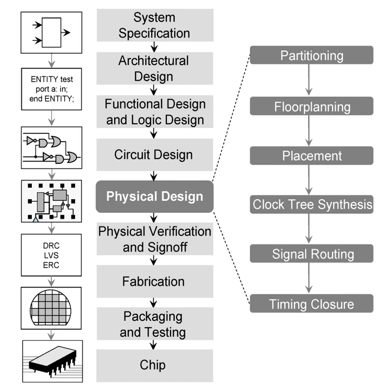Physical design is based on a netlist which is the end result of the synthesis process. Synthesis converts the RTL design, usually coded in VHDL or Verilog HDL, to gate-level descriptions which the next set of tools can read and understand. This netlist contains information on the cells used, their interconnections, area used, and other details. Typical synthesis tools are Cadence RTL Compiler, Build Gates, Physically Knowledgeable Synthesis, and Synopsys Design Compiler. During the synthesis process, constraints are applied to ensure that the design meets the required functionality and speed specifications. Only after the netlist is verified for functionality and timing is it sent for the physical design flow.